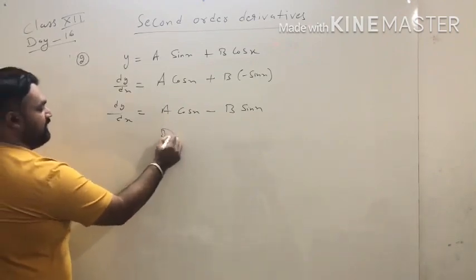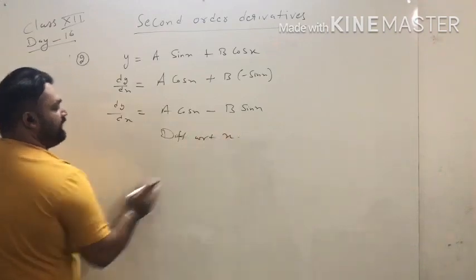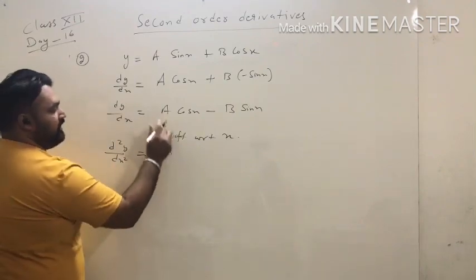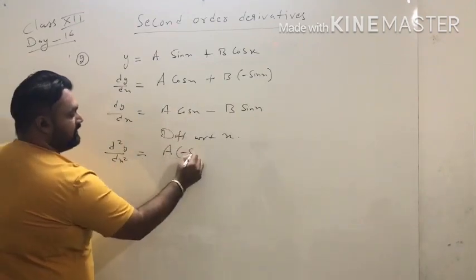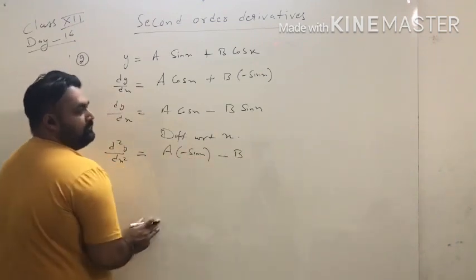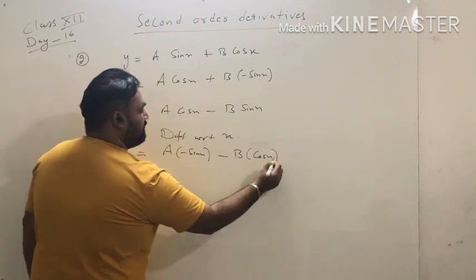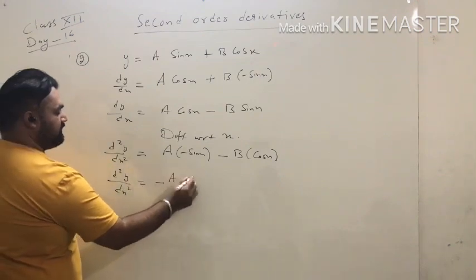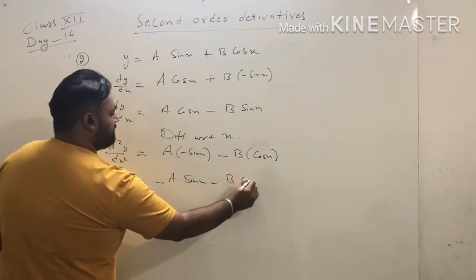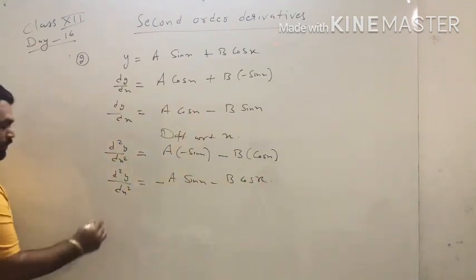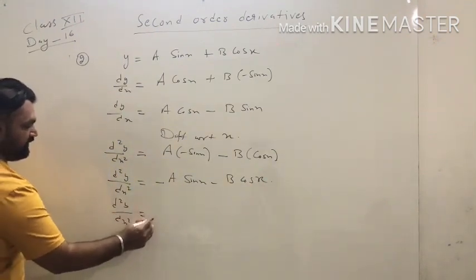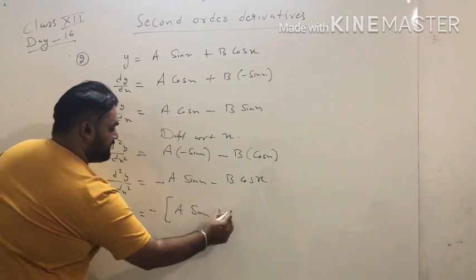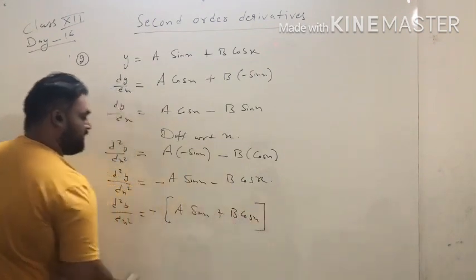Now again differentiate with respect to x. d²y/dx²: a is constant, the derivative of cos x is minus sin x, minus b, the derivative of sin x is cos x. So d²y/dx² equals minus a sin x minus b cos x. Now take minus as a common factor, so this becomes minus(a sin x + b cos x).